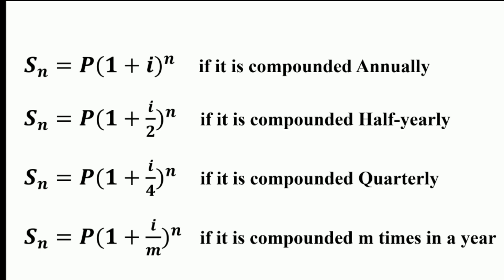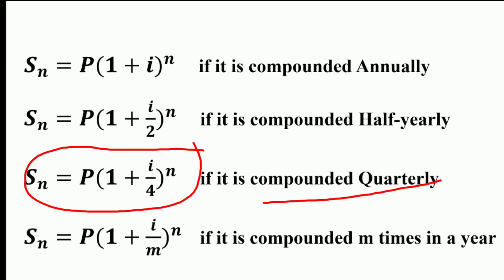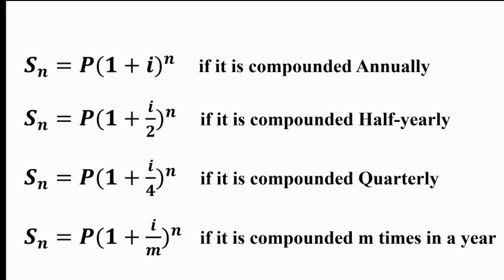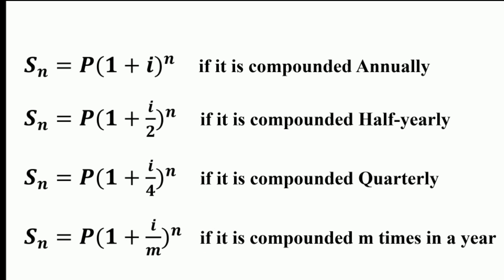The equation FV = P × (1 + I)^n is used when interest is compounded annually. If compounded half-yearly, the equation becomes P × (1 + I/2)^n. If quarterly, it becomes P × (1 + I/4)^n. If compounded monthly or m times per year, the formula becomes P × (1 + I/m)^n. We can use these equations accordingly depending on how the interest rate is compounded.